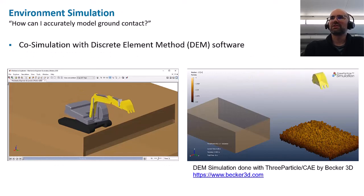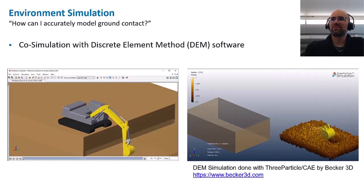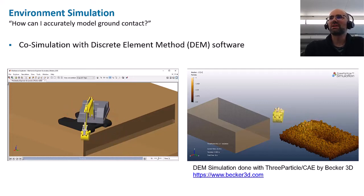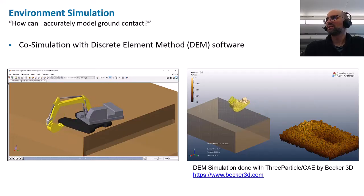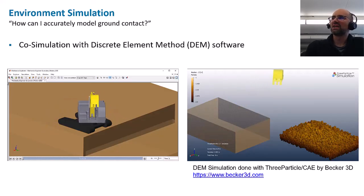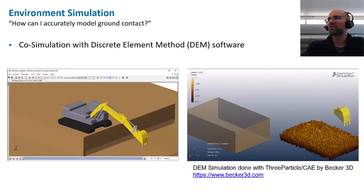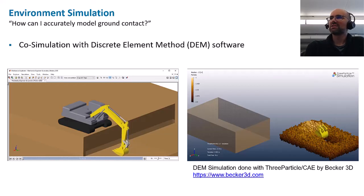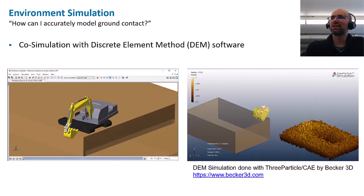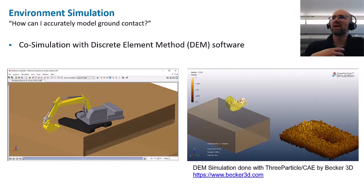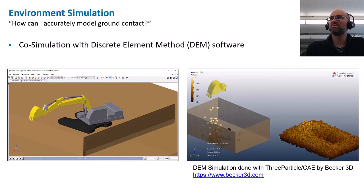Another very relevant topic for off-road machinery is simulation of ground contact. We show one example of how to do this by co-simulating with discrete element methods. On the right-hand side, this is done with a three-particle simulation tool — software that allows high-fidelity simulation of contact between the shovel and rocks, gravel, sand, and similar materials. Since discrete element method calculations take a very long time, the computation was done offline and then a playback was co-simulated with Simulink to enable real-time simulation of ground contact.